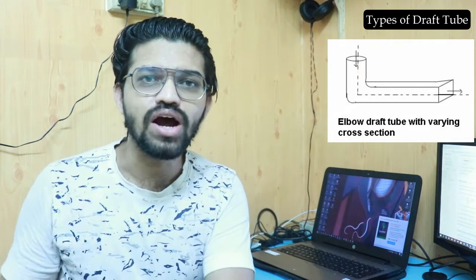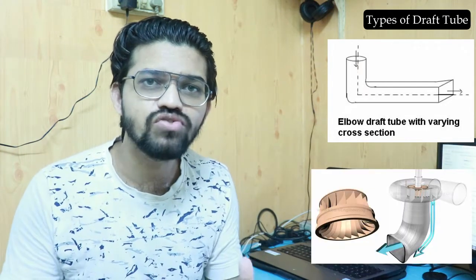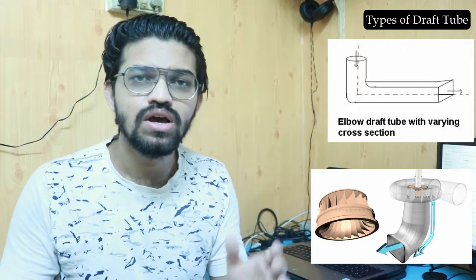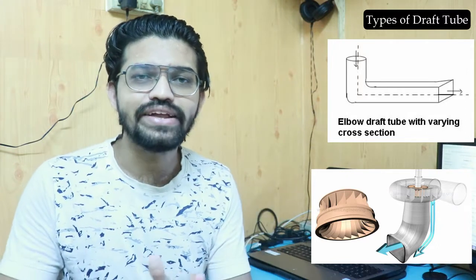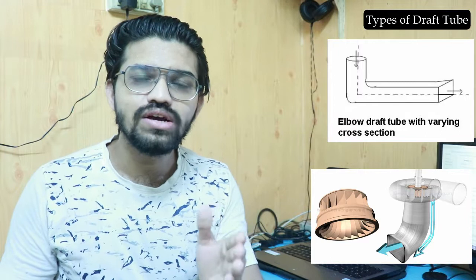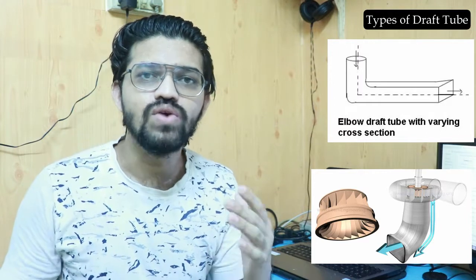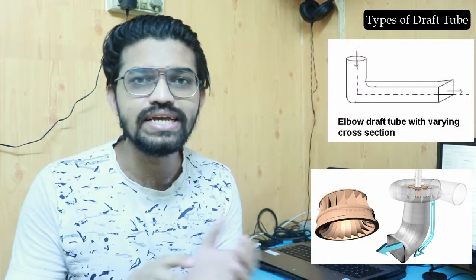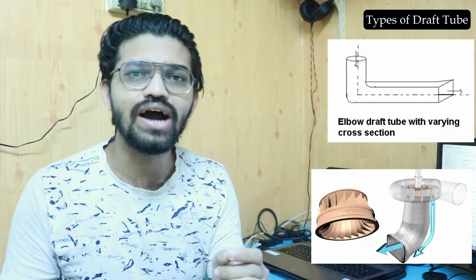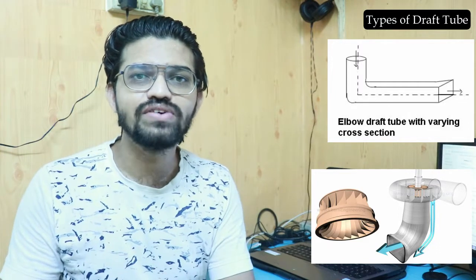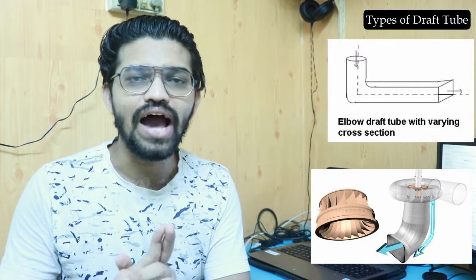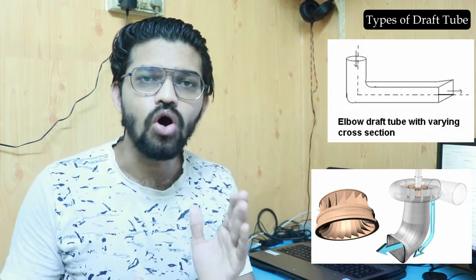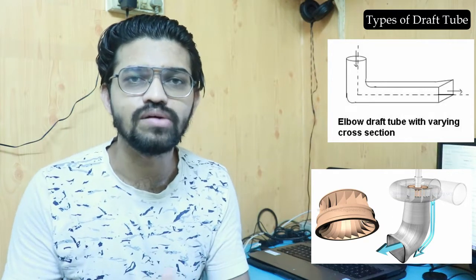The next type is the draft tube with circular inlet and rectangular outlet. This is a modification of the previous elbow type draft tube and is also at right angles. In the previous elbow type, efficiency was 60%; here, to increase the efficiency, the outer periphery is given a rectangular shape. It is also suitable for the horizontal shaft Francis turbine.